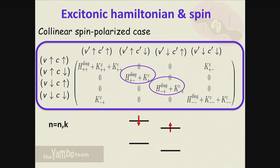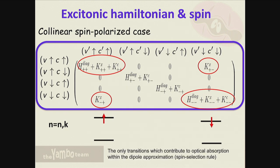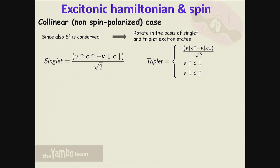The up-up and down-down transitions are the only ones contributing to the optical absorption spectrum within the dipole approximation, due to the spin selection rule. For the non-spin-polarized case, since Sz is a good quantum number and so is S-squared, it's more convenient to rotate the matrix into the singlet-triplet space. You take combinations of up-up, down-down, and up-down, down-up to obtain singlet and triplet excitons. The matrix then appears as shown.